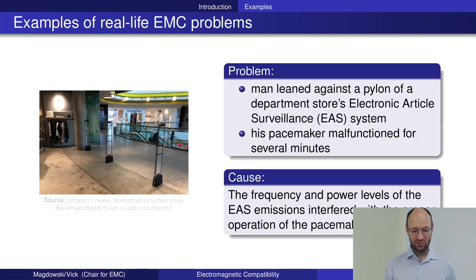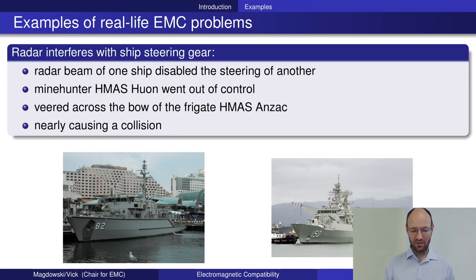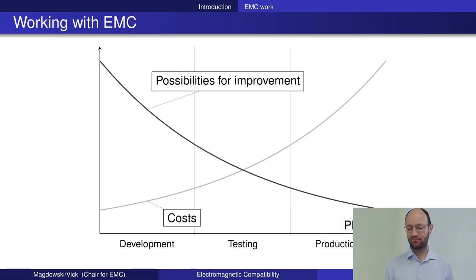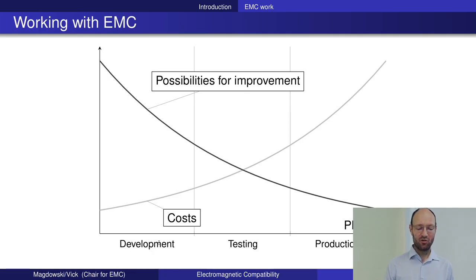Let's continue with some EMC examples. The message of this slide is the following: imagine you are developing a product — a medical engineering product, a control system for a car, any product. You develop it, and at the end of the development you have a prototype, then you go into testing, and then you have a final prototype sample.